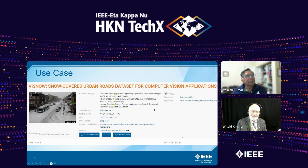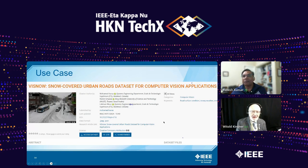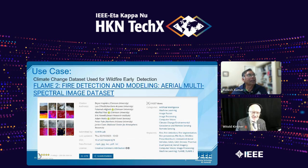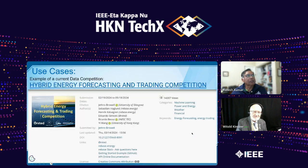Here are a few examples. One I downloaded about two hours after it was uploaded: a snow-covered urban road data set for computer vision applications — a joint program between King Abdullah University in Saudi Arabia and Montreal. Another is a flame-to-fire detection and modeling aerial spectral image data set, a cooperation between a university and a research institute. There was also a competition sponsored by a corporation for hybrid energy forecasting and trading.